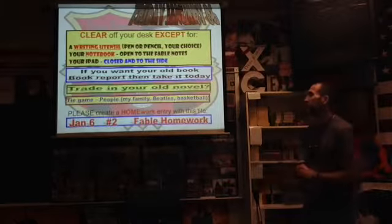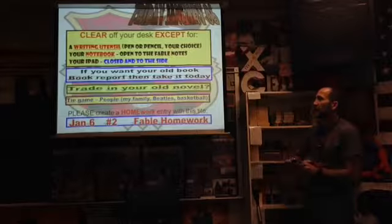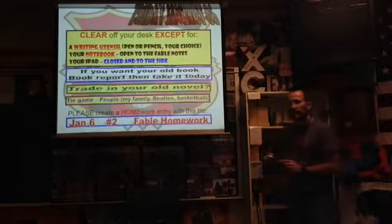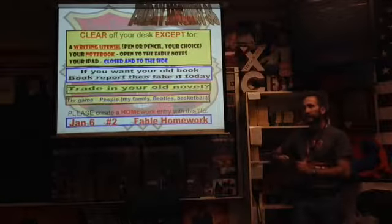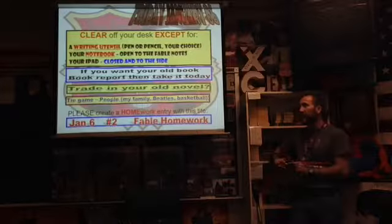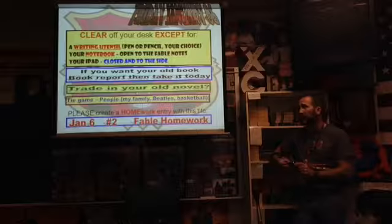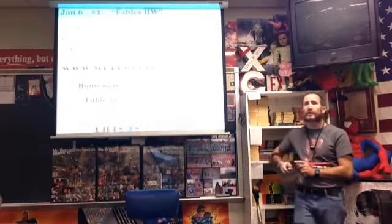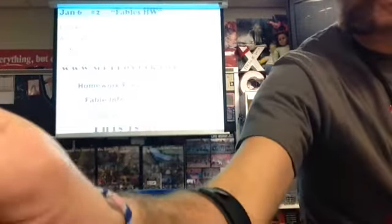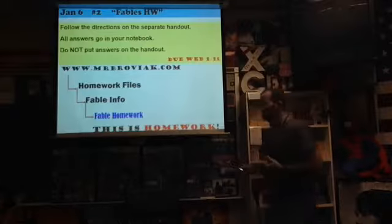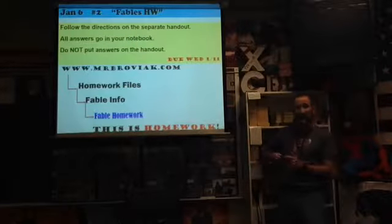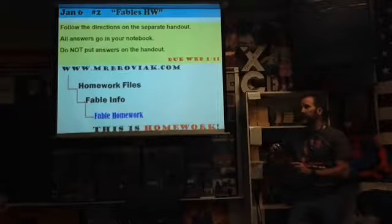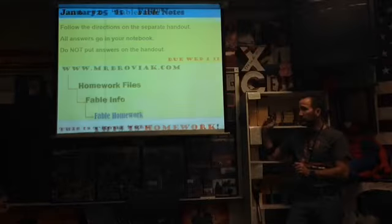This is Friday, January 6th. We're going to get into more fable-y stuff. Your old book report - if you're at home, it's not going to be any good because it'll be gone by the time you get back. Your old novel, whether it was The Shadow Club or Outsiders, you can trade that in for either 5B points or Monkey Taffy. Or you can keep it. Thai game was People, My Family, Beatles, Basketball. And then we have our homework assignment which you'll have to download from the new page on my website.